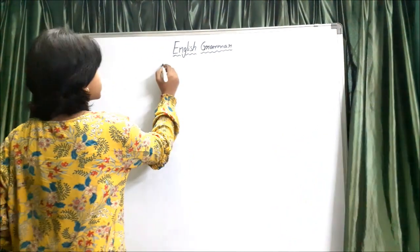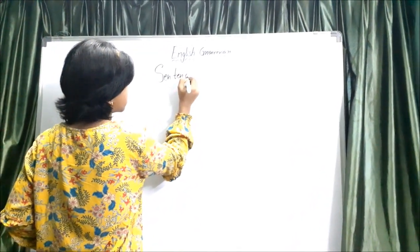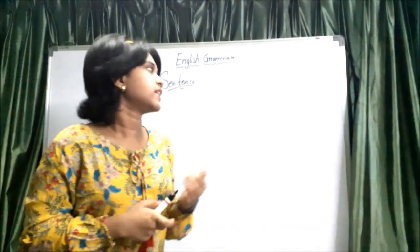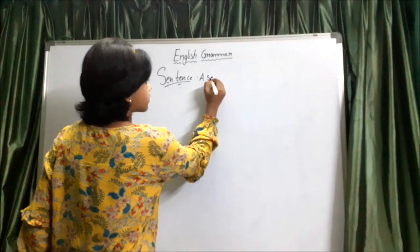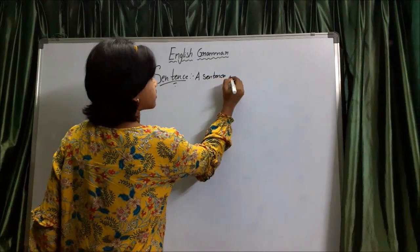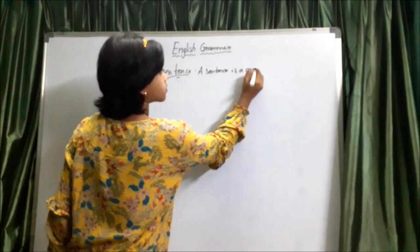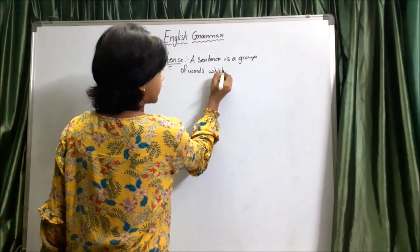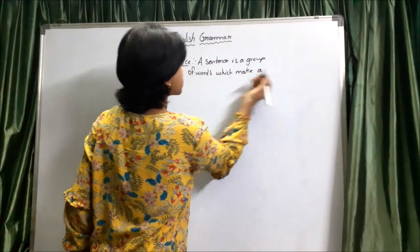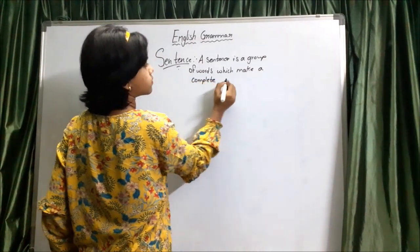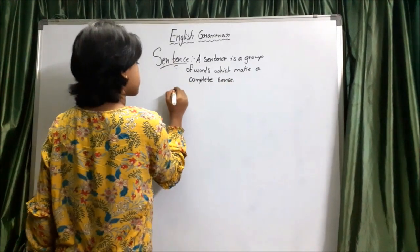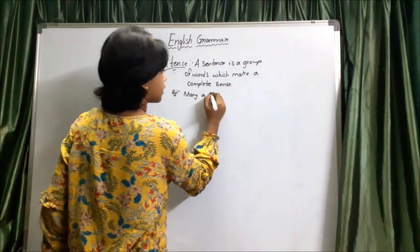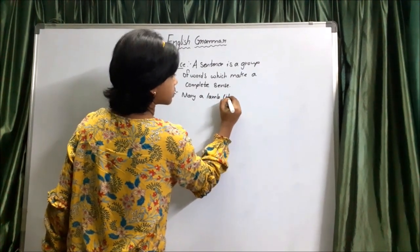Let's come to the topic. What is a sentence? A sentence is a group of words which make a complete sense. Let's take an example for it. The example is: Marry a lamb little has.